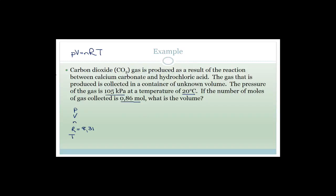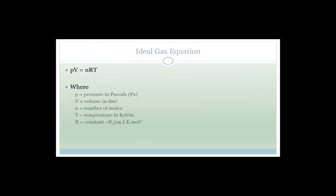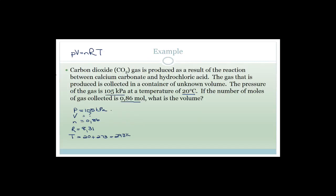Carbon dioxide, which is CO2 gas, is produced as a result of the reaction between calcium carbonate and hydrochloric acid. The gas produced is collected in a container of unknown volume. The pressure of the gas is 105 kilopascals at a temperature of 20 degrees Celsius. If the number of moles is 0.86 moles, what is the volume? We want P, V, n, R, and T. R is a constant which is 8.31.